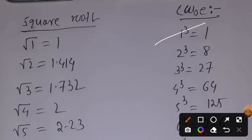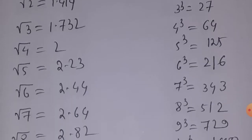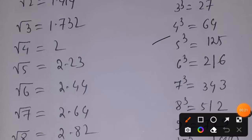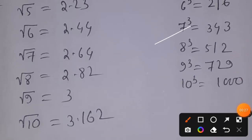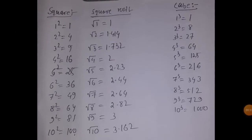1³=1, 2³=8, 3³=27, 4³=64, 5³=125, 6³=216, 7³=343, 8³=512, 9³=729, 10³=1000. With the previous video and this one, we have learned squares, square roots, and cubes up to 10.